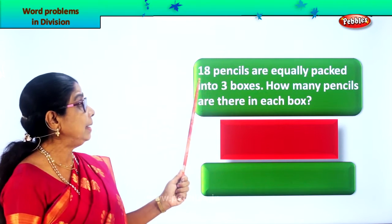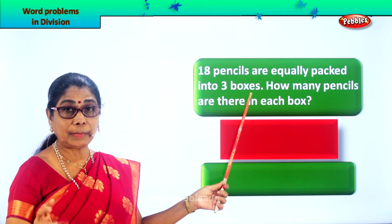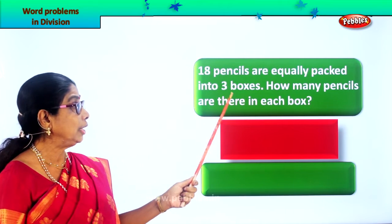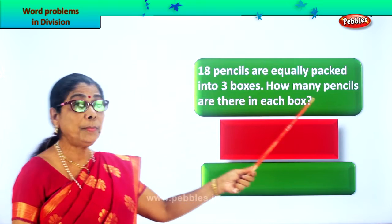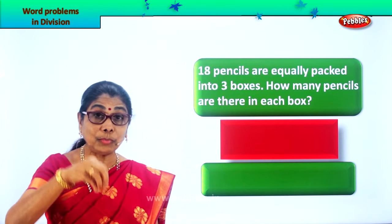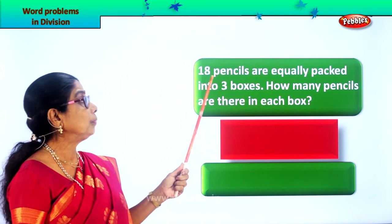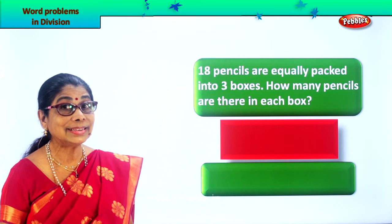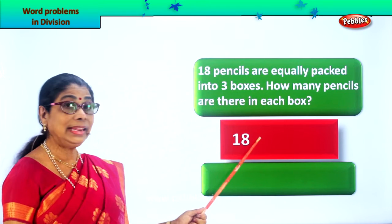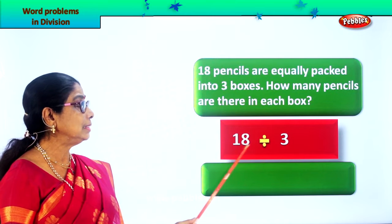Let's read: 18 pencils are equally packed into three boxes. How many pencils are there? 18. How many boxes are there? Three. All the pencils have to go equally into three boxes. The question is: how many pencils are in each box? So we write 18 divided by 3 — 18 pencils divided by 3.